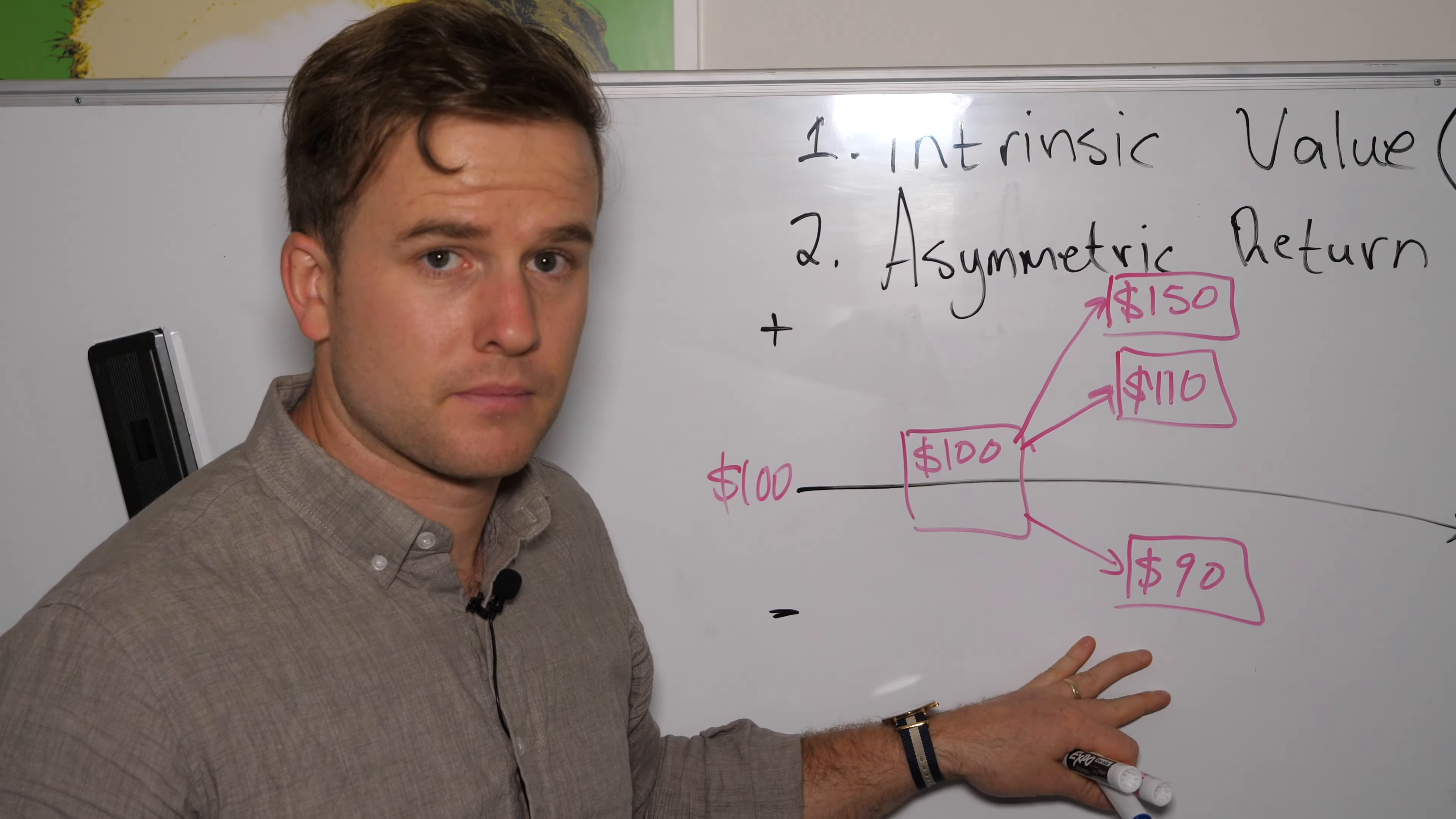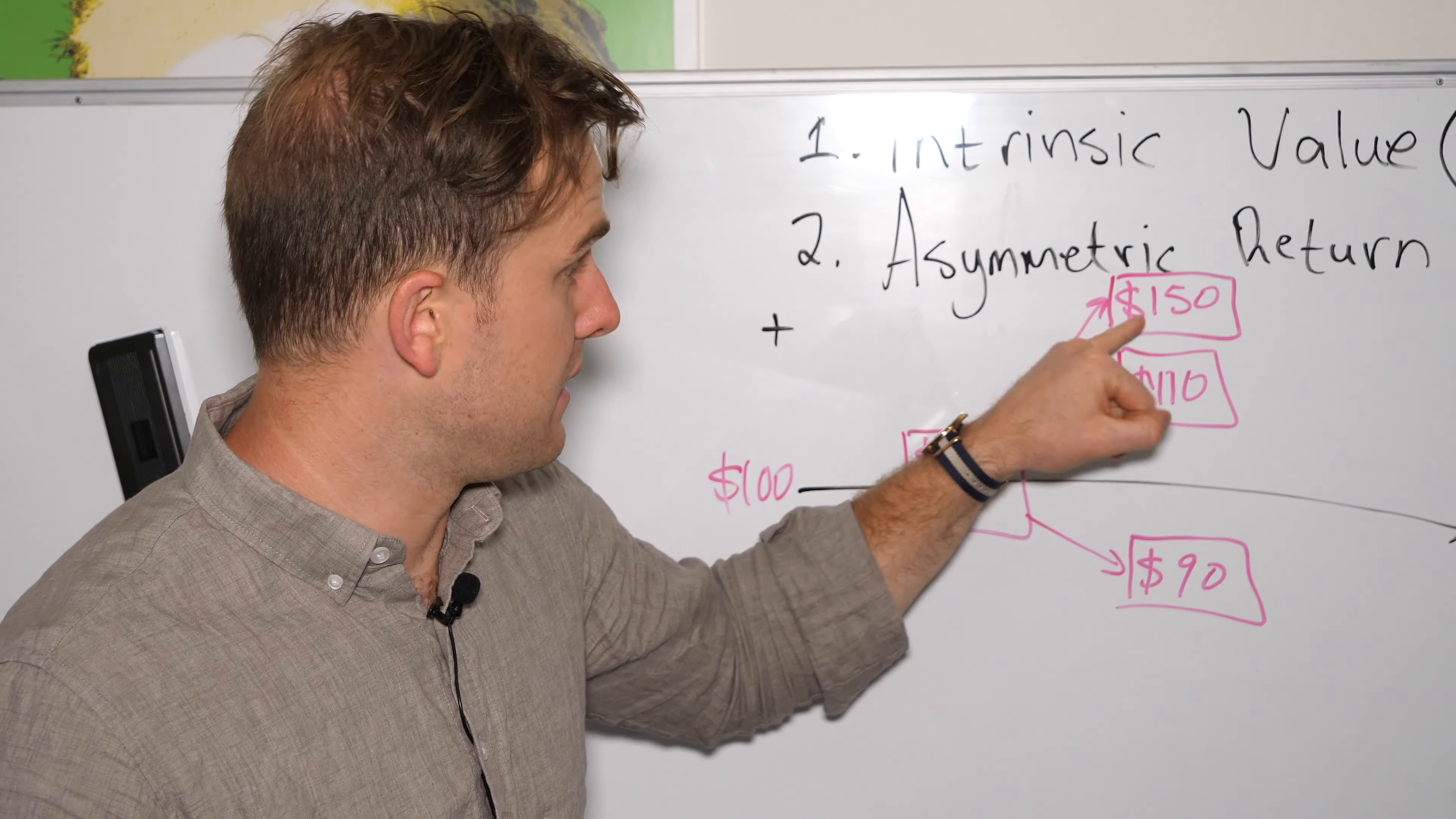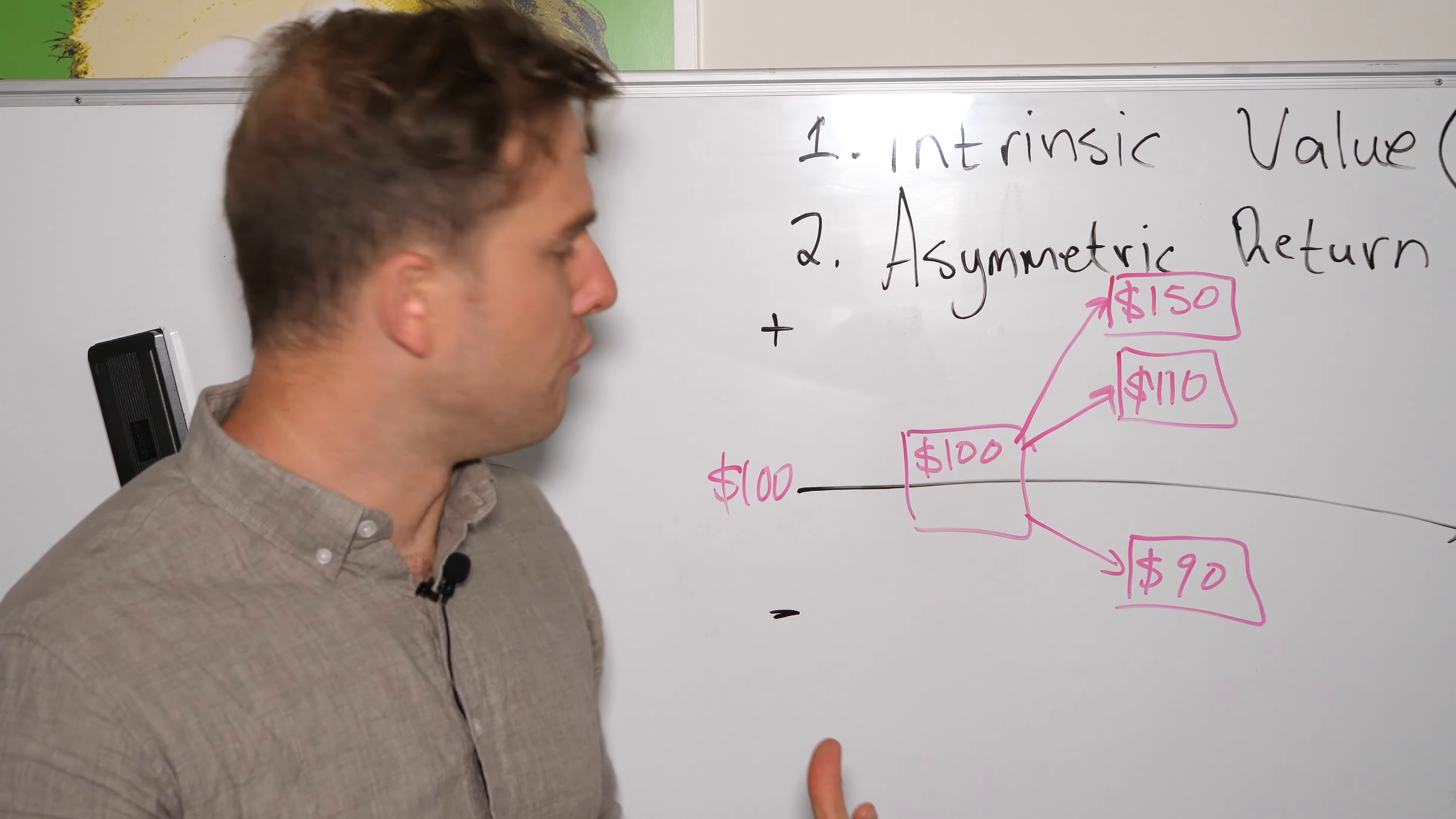What we have here is two on the upside and one on the downside. Would you take this bet? And I'm hoping you would say yes, because in this case, there's two chances out of three, two opportunities out of three that we make money and only one that we lose money. Not only that, if we happen to get this outcome, which is $150, the upside greatly outweighs the downside. And so this is where really good investors like Warren Buffett talk about asymmetric returns.